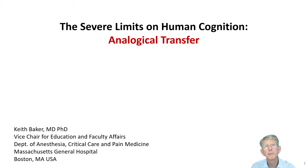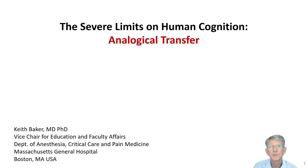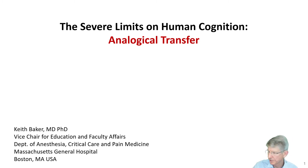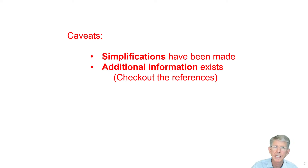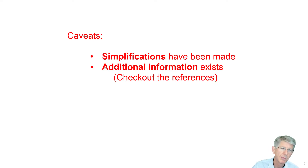Hi, I'm Keith Baker, and today I'm going to talk a little bit about analogical transfer and the severe limits our cognitive systems place on that process. I have some caveats — I'm going to make some simplifications from some fairly sophisticated studies. If you want some additional information, the references are at the bottom of each slide.